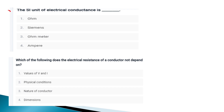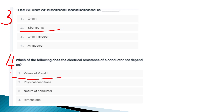The third question is the SI unit of electrical conductance. The fourth question: what does the electrical resistance of a conductor NOT depend on? The options are: values of voltage and current, physical condition, nature of conductor, and dimensions. The resistance of a conductor does NOT depend on the values of voltage and current.